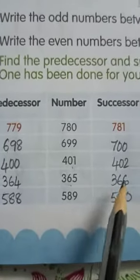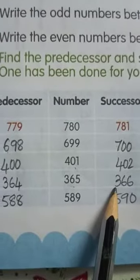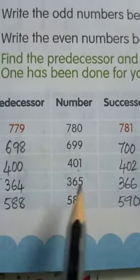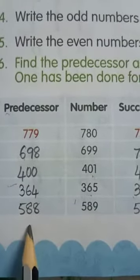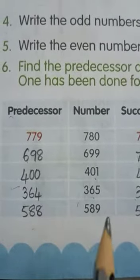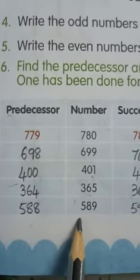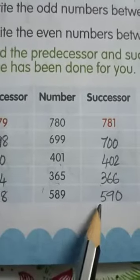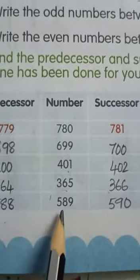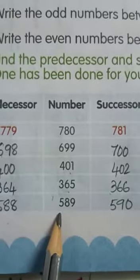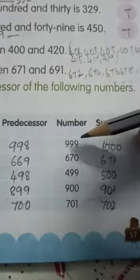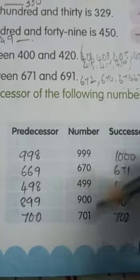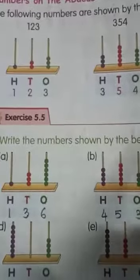364 is the predecessor of 365, and 366 is the successor of 365. 588 is the predecessor of 589, and 590 is the successor of 589. In the same way, you have to write the before and after numbers for all the given three-digit numbers.